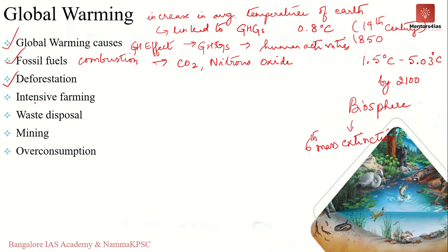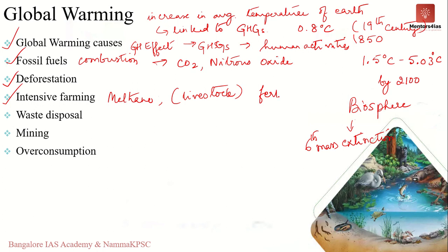The third cause is intensive farming. Livestock such as cattle and sheep produce large amounts of methane when digesting their food, and fertilizers used in farming produce nitrous oxide emissions — both are major greenhouse gases that contribute to global warming.